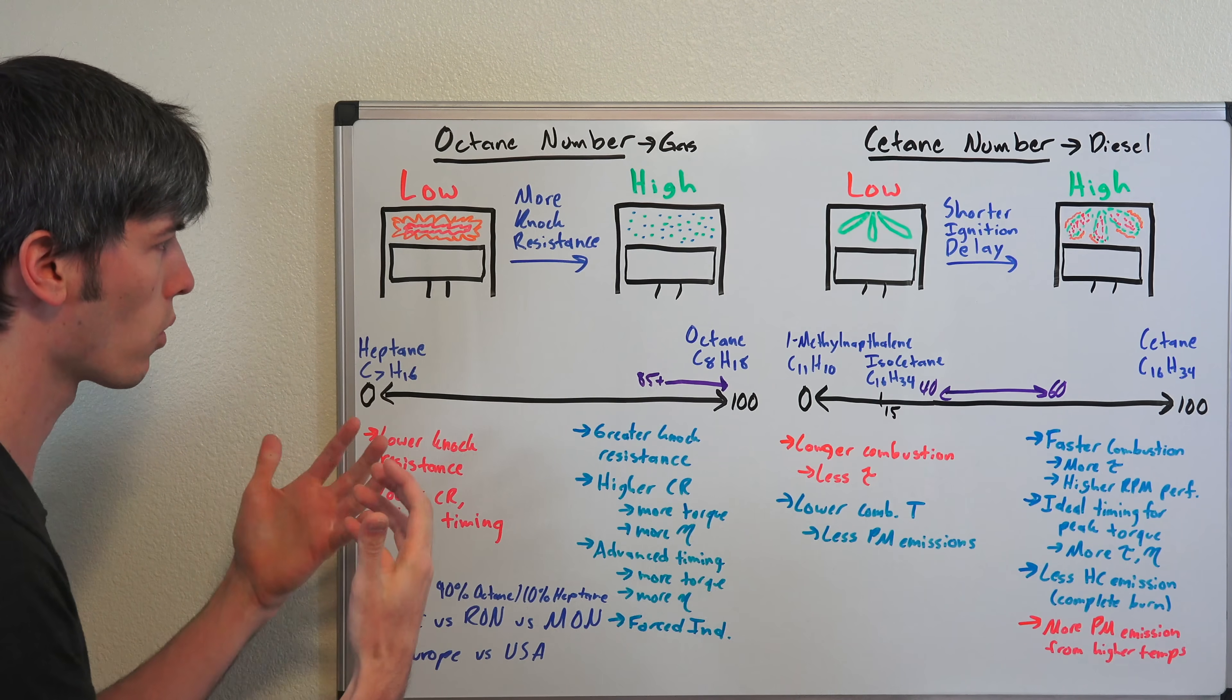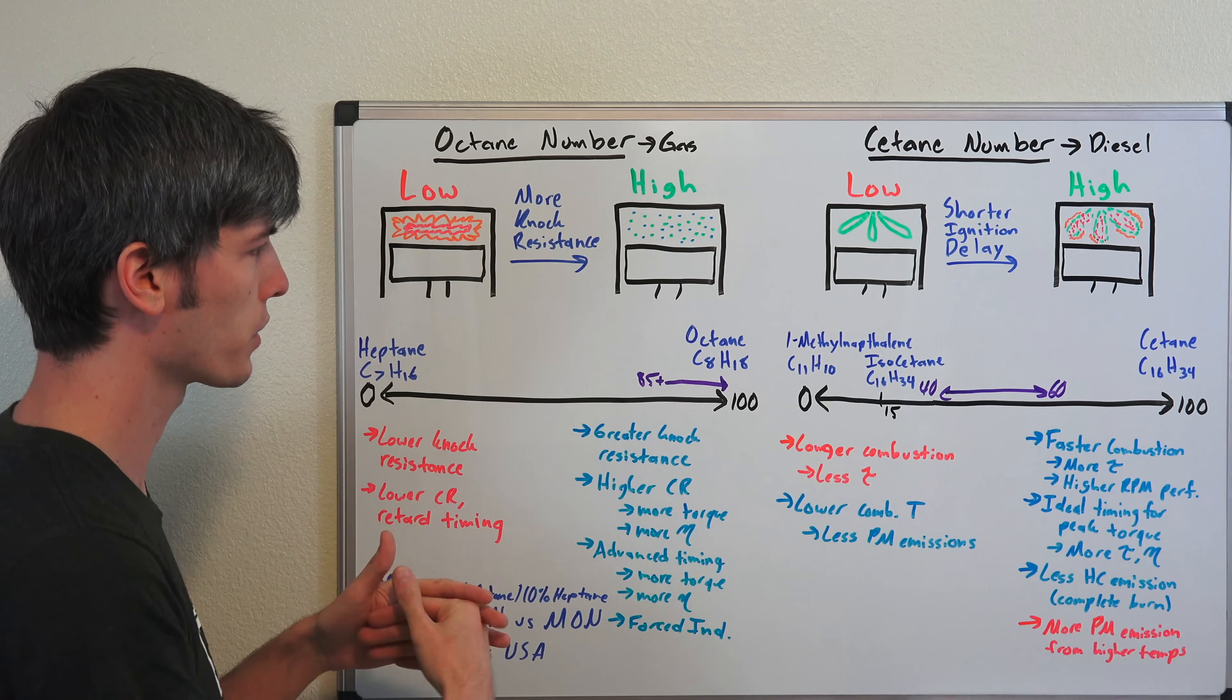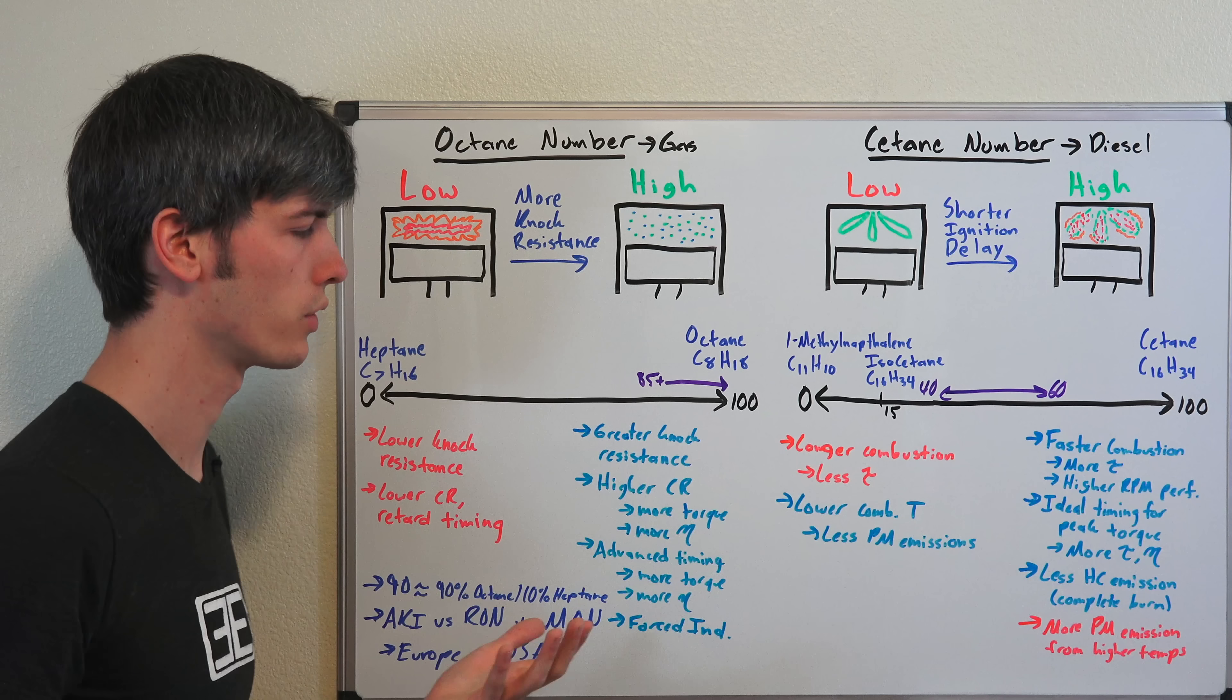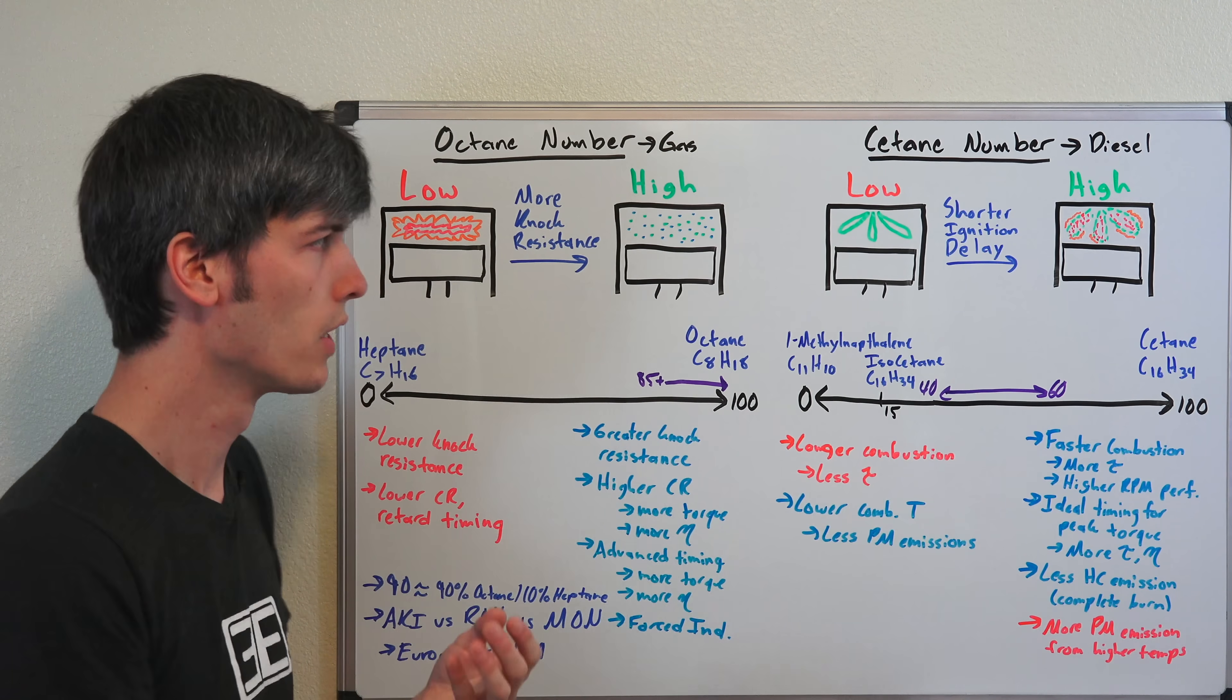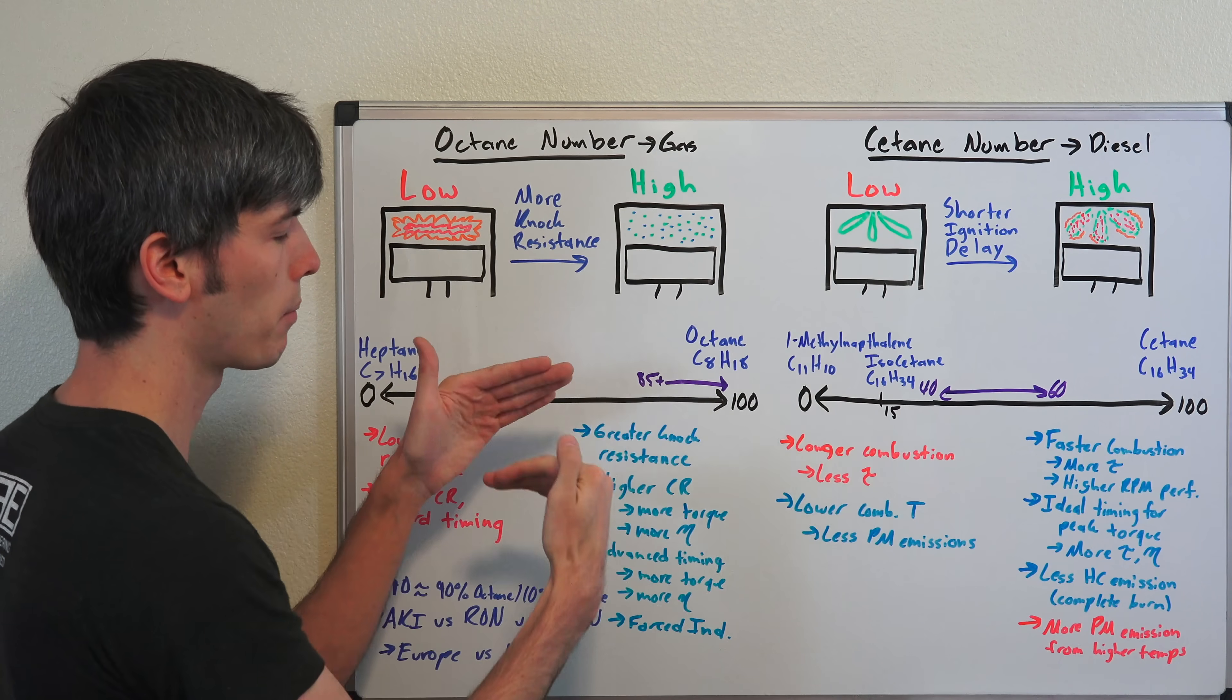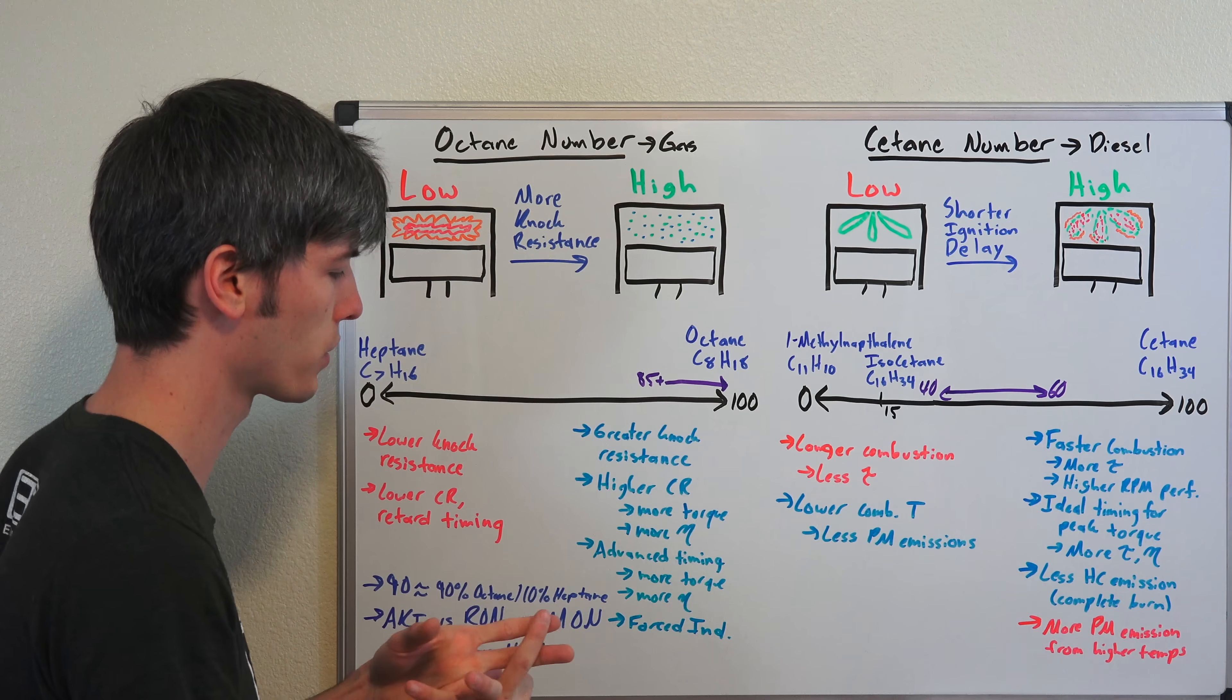Why would you want that higher number? Well, that greater knock resistance allows you to use higher compression ratios, and higher compression ratios lead to more torque and greater efficiency. They also allow you to advance the timing, so you can fire the spark plug sooner and get peak torque to occur when that piston is closer to top dead center.